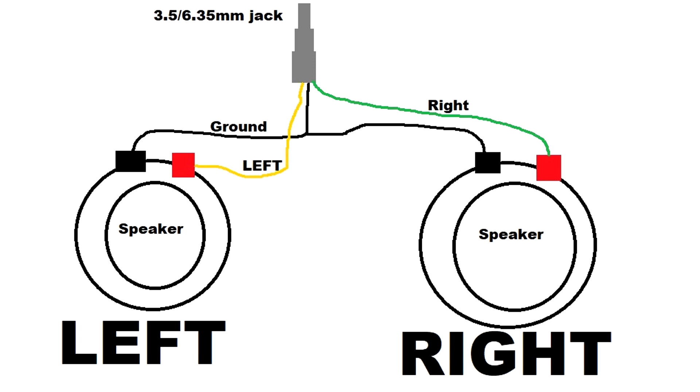Before we get to work, a brief simplified theory on what a balanced connection for headphones is. Regular, everyday stereo headphones are connected to a sound source with a 3.5mm or 6.35mm stereo jack, which has three contacts, or three wires: left, right, and a common ground wire. It looks something like this.